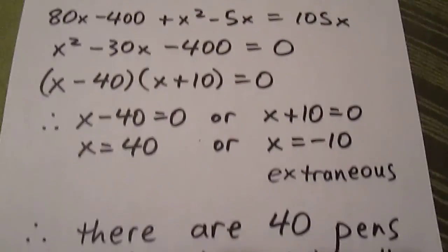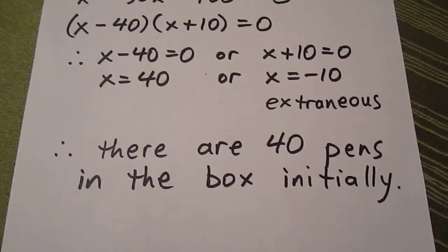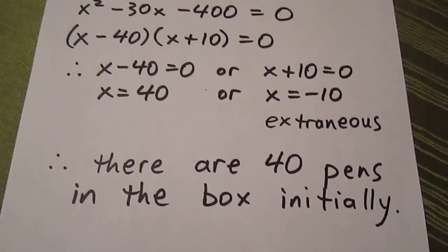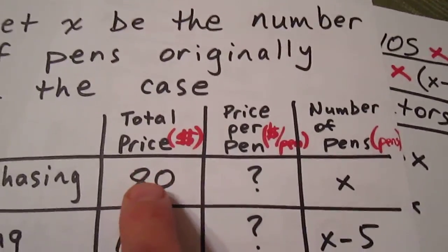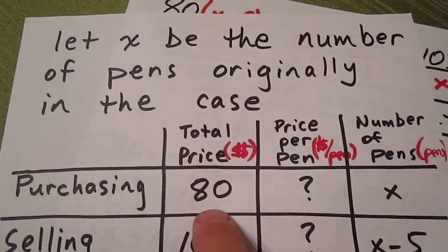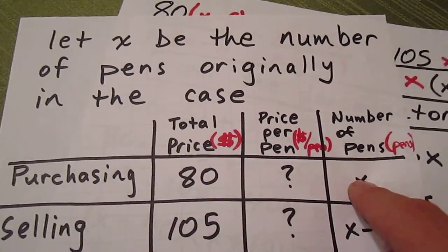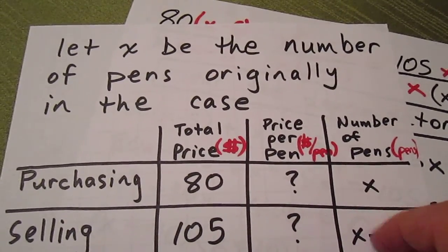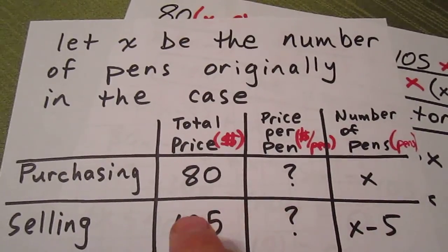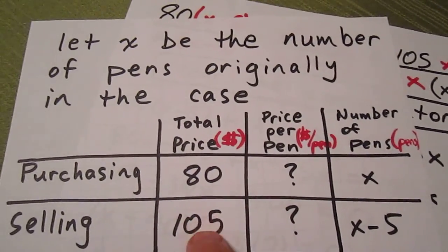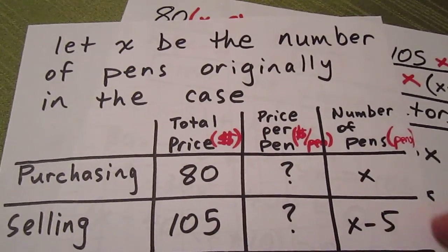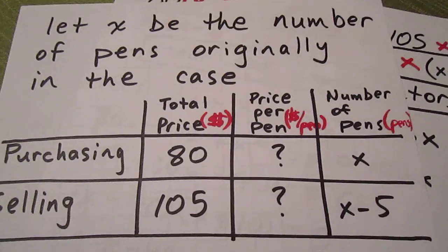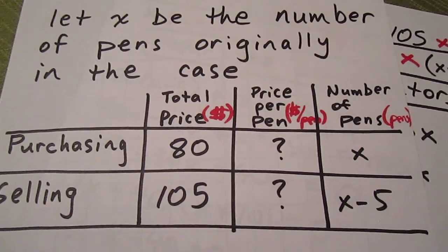We have X equals 40, and we can say with certainty that there are 40 pens in the box initially. Going back to our scenario, we ask ourselves if this makes sense. She purchased the pens for $80. There were 40 in the box, so she purchased them at $2 per pen. She then kept five for herself and sold 35 pens at $105. That's $3 per pen. So she profited a dollar on every pen she sold. Checking our answer lets us know that we got the correct answer to this problem.